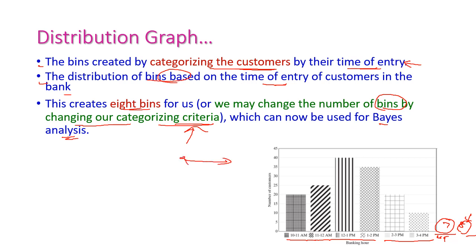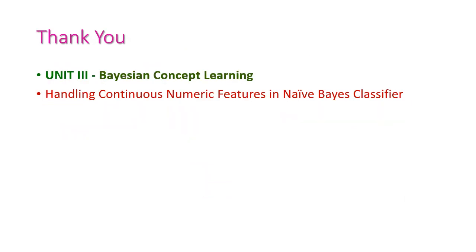So far we have seen the handling continuous numerical features in Naive Bayes classifier. That is, we have seen how to convert the continuous numerical data into the categorical data. Once the continuous data is converted into categorical data, then we can easily apply the Naive Bayes classifier to classify the data.